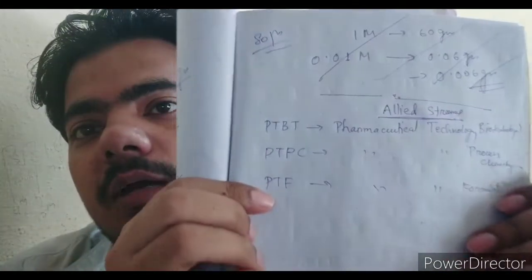You should understand these so that if you are not getting admission in the major parent subject, you can take an allied branch. Some subjects I will cover today are PTBT, PTPC, and PTF — these are all really important to know. PTBT is Pharmaceutical Technology Biotechnology, and it is one allied branch of biotechnology. Here you can see all three branches I have written.